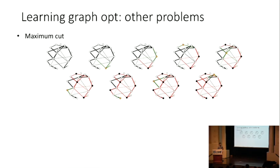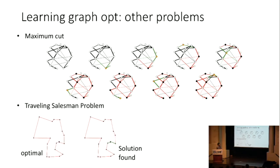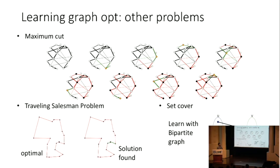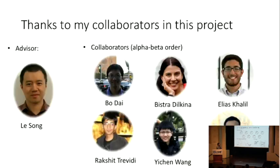Also, we can generalize to other combinatorial optimization problems. For example, the max cut, where you want to divide the nodes into two separate components and maximize the edges between the two components. Or the classical traveling salesman problem. And also, more generally, the set cover.